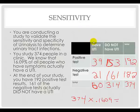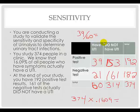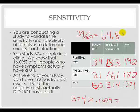Sensitivity is the ability of the test to correctly identify people who had the disease. So we're going to take 39 and divide that by 60 to give us our sensitivity, which turns out to be about 64.8%. And that's how you calculate sensitivity.